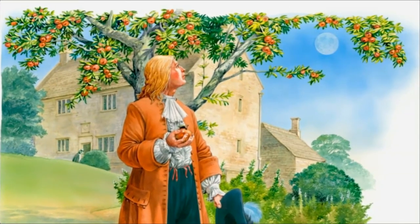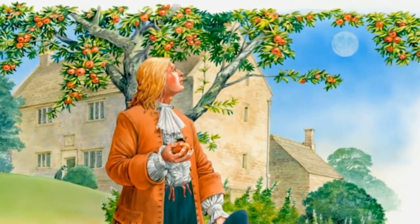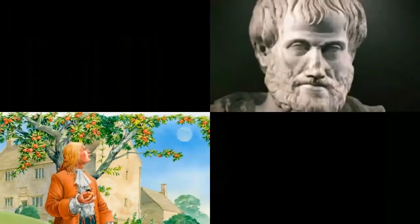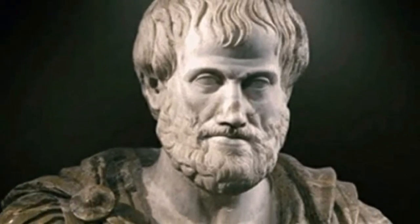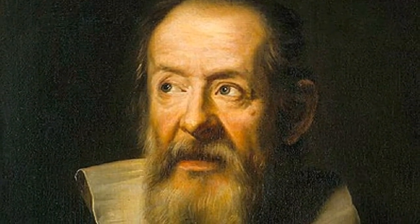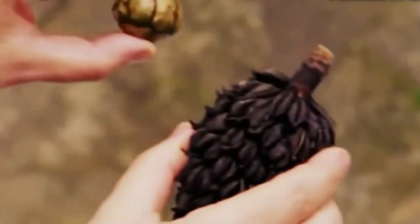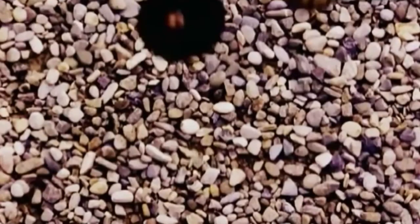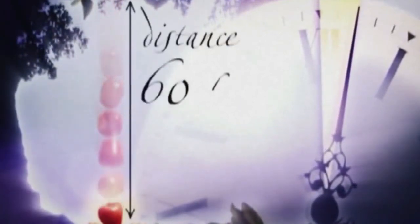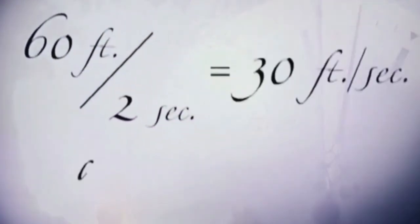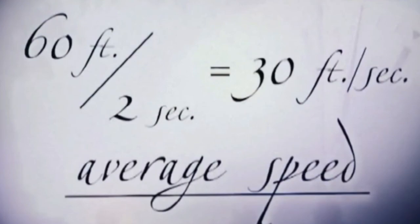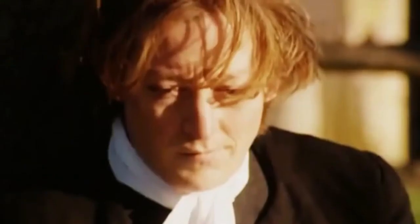When Newton observed the falling apple more closely, he found something strange. At that time, Aristotle had theorized that if two bodies of different masses are dropped from a height, the heavier one falls faster. But Galileo proved this wrong through experiments, showing that even bodies with vastly different masses fall with the same velocity, because the gravitational acceleration of any planet is the same for all objects.